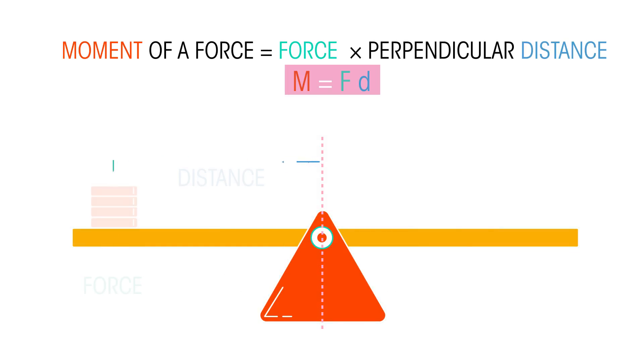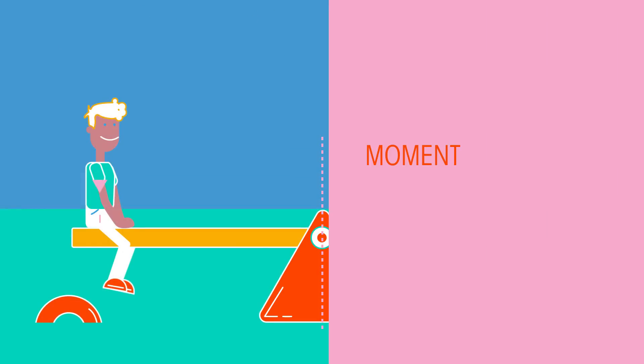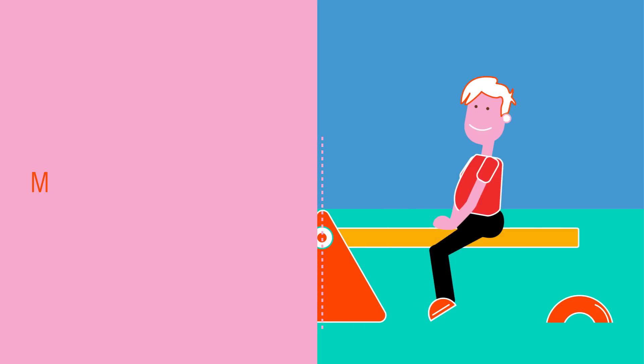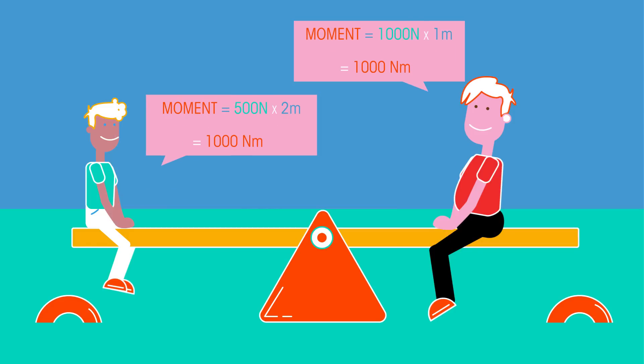So the moments of the lighter person is 500 newtons, multiplied by 2 metres. 1000 newton metres. And the heavier person is 1000 times 1 metre, to also give 1000 newton metres. They are perfectly balanced on their seesaw.